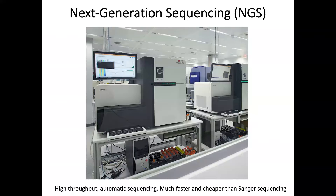Next generation sequencing has revolutionized the biological sciences. It is ultra-high-throughput automated sequencing, which is why it's also called NGS. Here we show some NGS machines. The sequencing of the first human genome took about 13 years, but today it only takes about one day. Now let's take a look at how genome sequencing is done in a video.